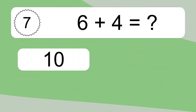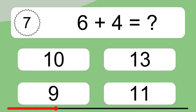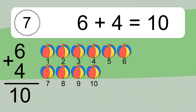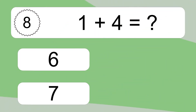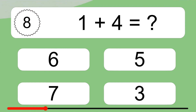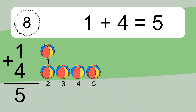6 plus 4 equals what? 6 plus 4 equals 10. Let's count it. 1, 2, 3, 4, 5, 6, 7, 8, 9, 10. 1 plus 4 equals what? 1 plus 4 equals 5. Let's count it. 1, 2, 3, 4, 5.